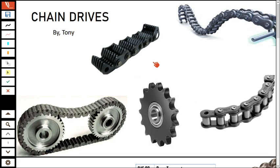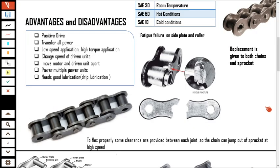Both the silent chain and the roller chain are positive drives — they always transfer the power almost completely from the driven pulley to the driver pulley. That is not the case with belt drives, where there is a power loss due to slippage happening between the belt and the pulley. Here, almost all the power gets transferred. It is also used in low-speed applications where high torque is required.